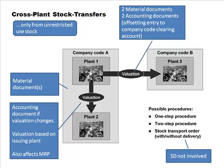If you are authorized, you can display the material document across company codes — each company code can access the material document and view it. Material documents are related to plant, not company code, so there's no difference if you want to view material documents for plant one and two versus plant one and plant three. The accounting document, however, would be related to company code.